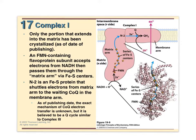Earlier you asked about ubiquinone Q becoming semiquinone radical and then ubiquinol — yes, that is certainly part of the Q cycle. But the Q cycle is more in depth — you see all three of those structures in the Q cycle. Those three forms of coenzyme Q occur at complexes one, two, and three. But the Q cycle itself is different from just those three possibilities.